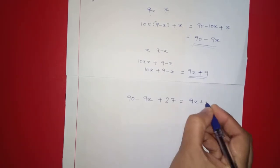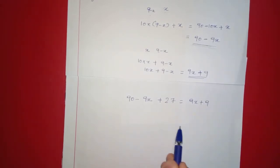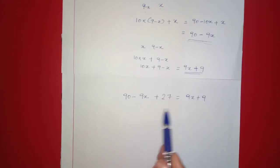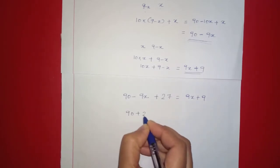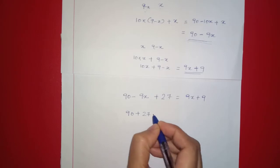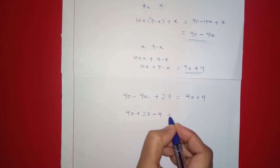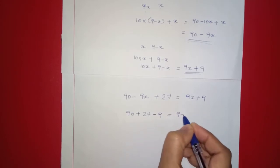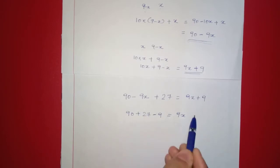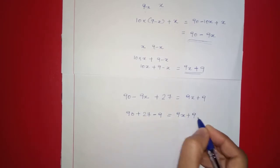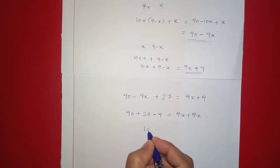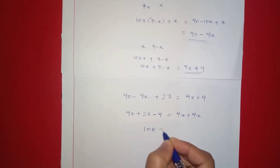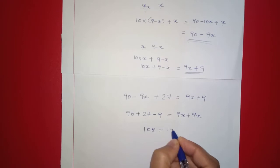Solving the equation: (9x plus 9) minus (90 minus 9x) equals 27. This gives 9x plus 9 minus 90 plus 9x equals 27, so 18x minus 81 equals 27, meaning 18x equals 108.